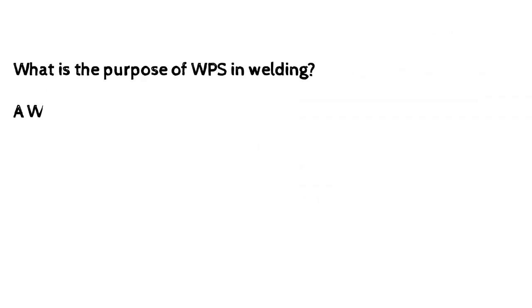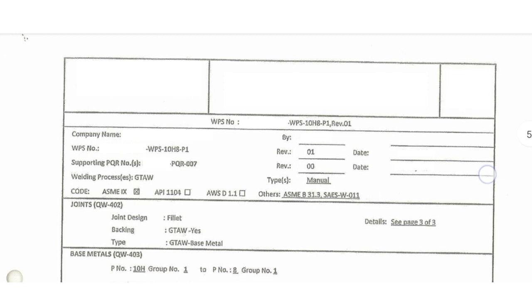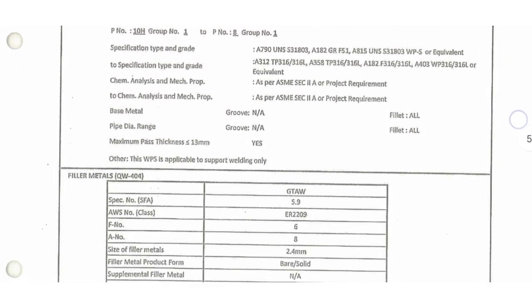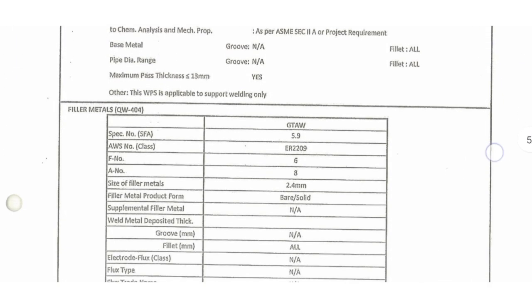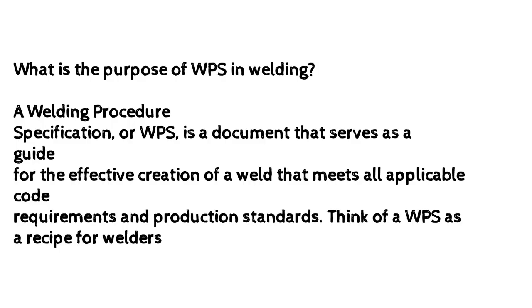What is the purpose of WPS in welding? A welding procedure specification, or WPS, is a document that serves as a guide for the effective creation of a weld that meets all applicable code requirements and production standards. Think of a WPS as a recipe for welders.